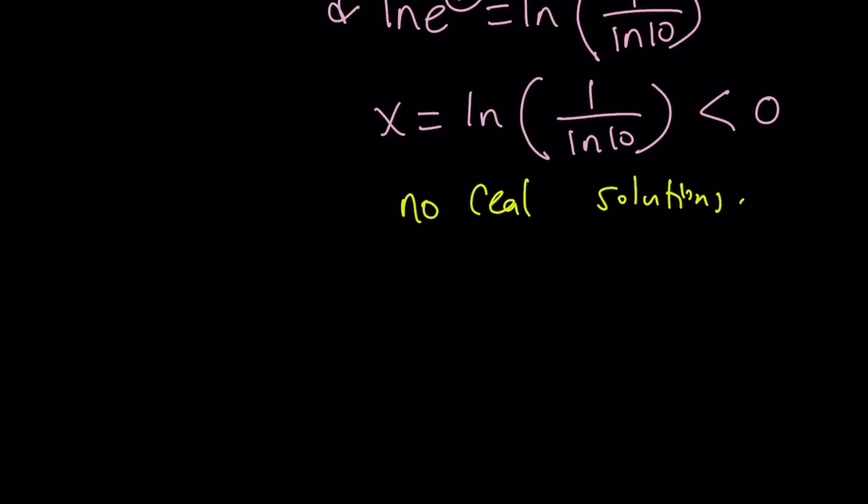In other words, we have no real solutions from here. ln 1 over ln 10 can be written as ln 1 minus ln ln 10, which is negative ln ln 10. This also tells you that this number is negative because this is obviously a positive quantity because ln 10 is greater than 1. But an opposite of that would be a negative quantity.